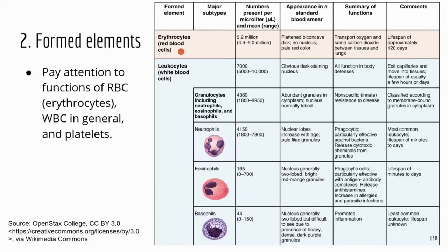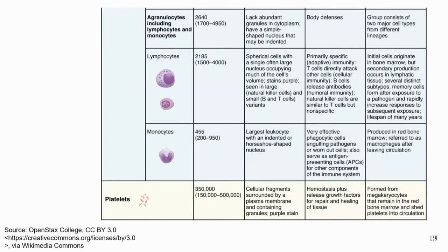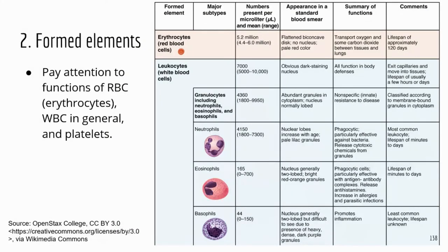I have a large table about formed elements, but you do not need to memorize all the information in it. It's there as a reference if you need more details on a specific type of cell. You only need to know the functions for each group: the function of red blood cells, white blood cells, and platelets.